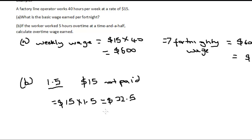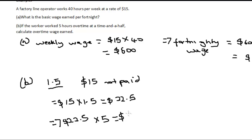To find the amount earned for overtime, we multiply the overtime rate of $22.50 by the number of hours worked overtime, which is 5. That is equal to $112.50, and that is the answer.